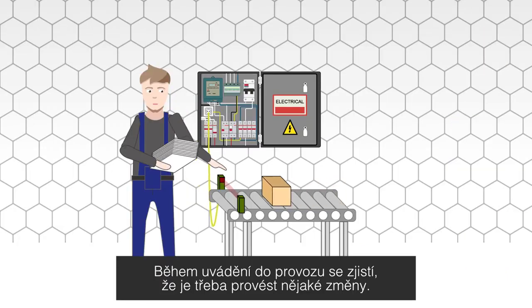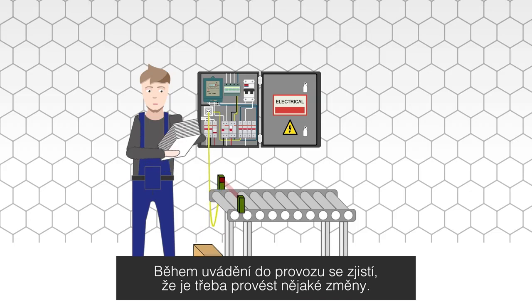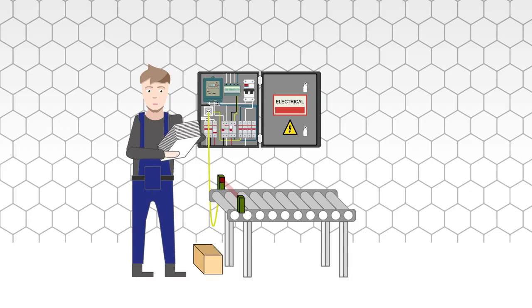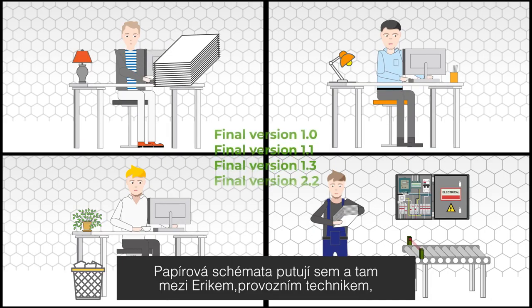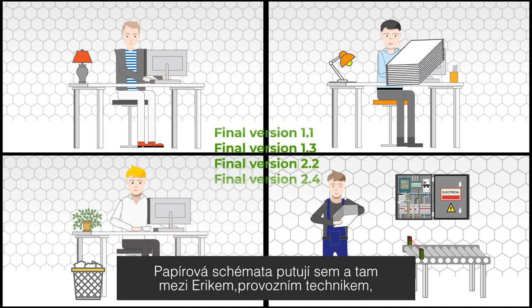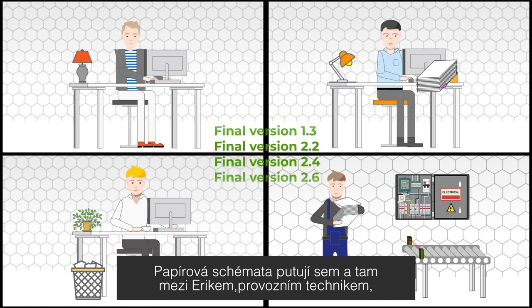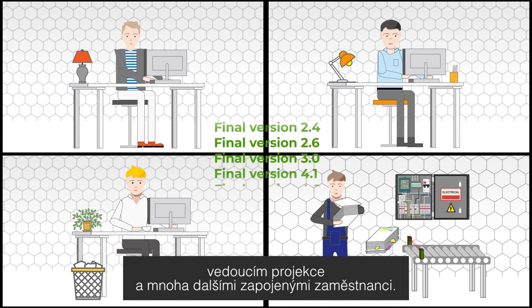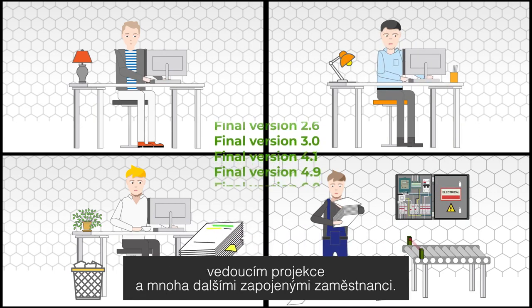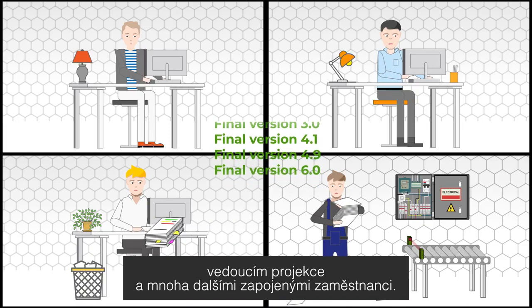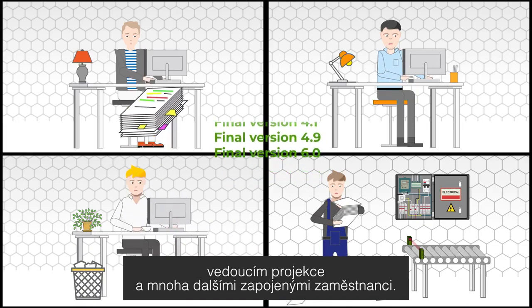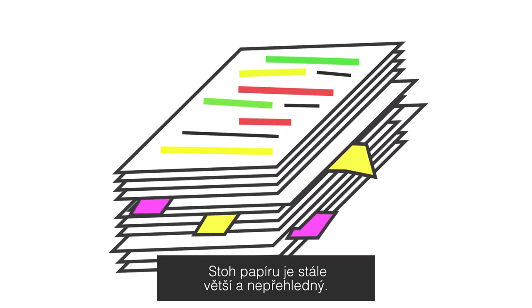Then, during commissioning, it appears that some changes need to be done. The paper schematics are going back and forth between Eric, commissioning, the head of engineering, and many other employees that are involved. The stack of paper gets more and more confusing and worn out.